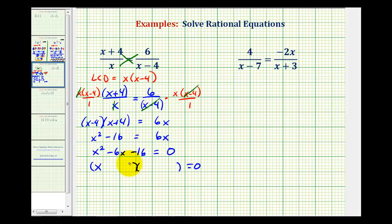Factors of x squared are x and x. Now we want the factors of negative 16 to add to negative 6, which would be negative 8 and positive 2.